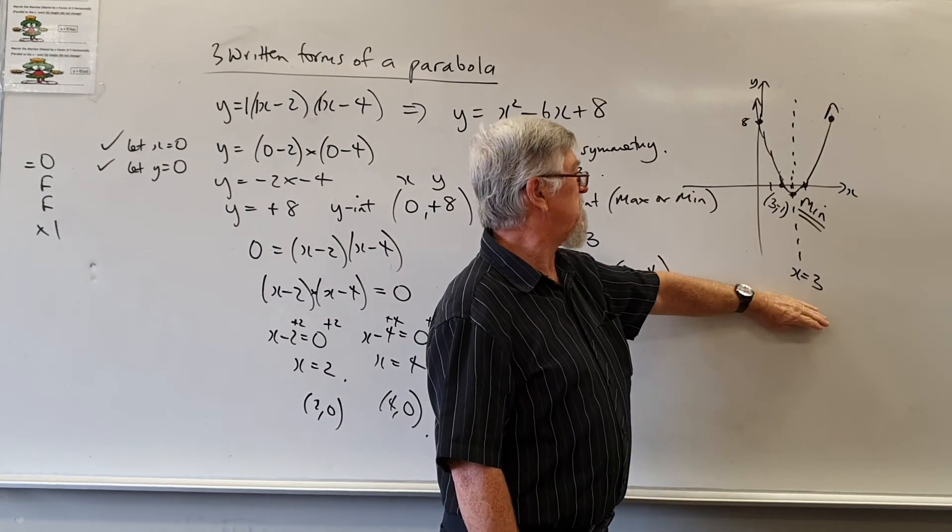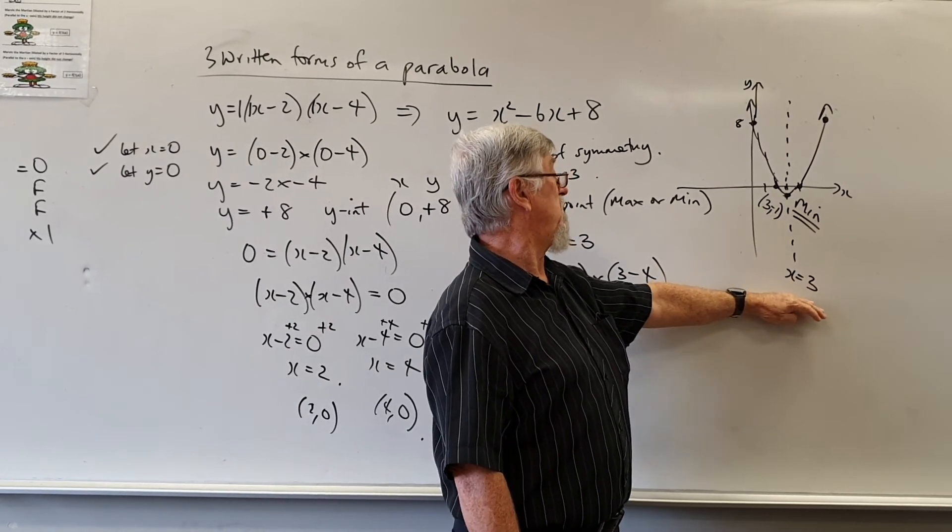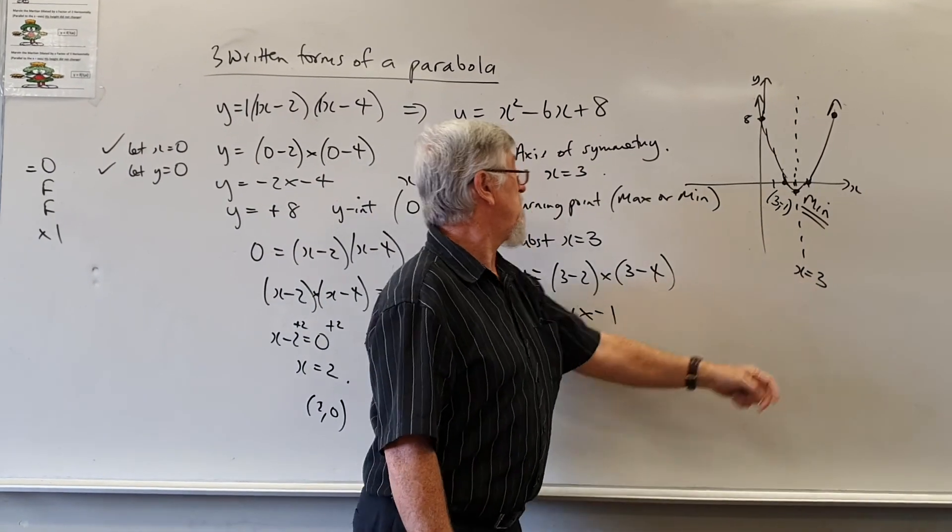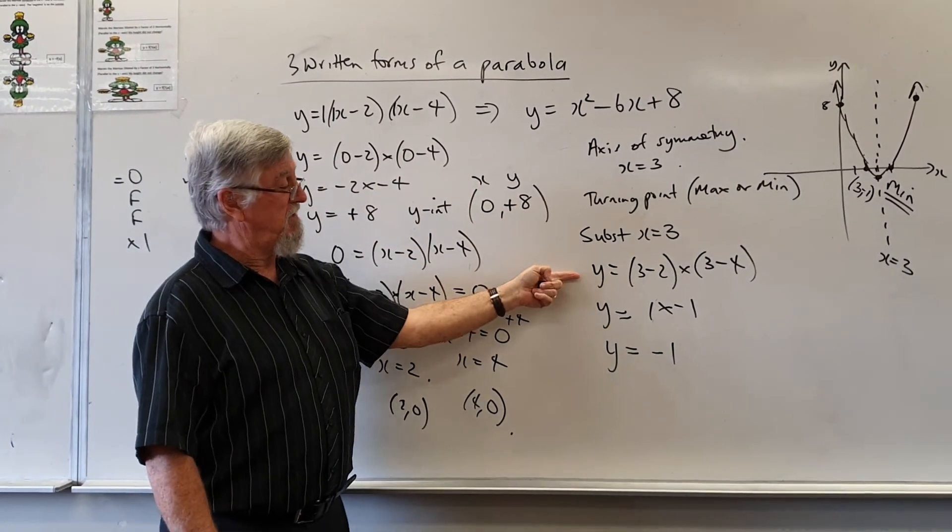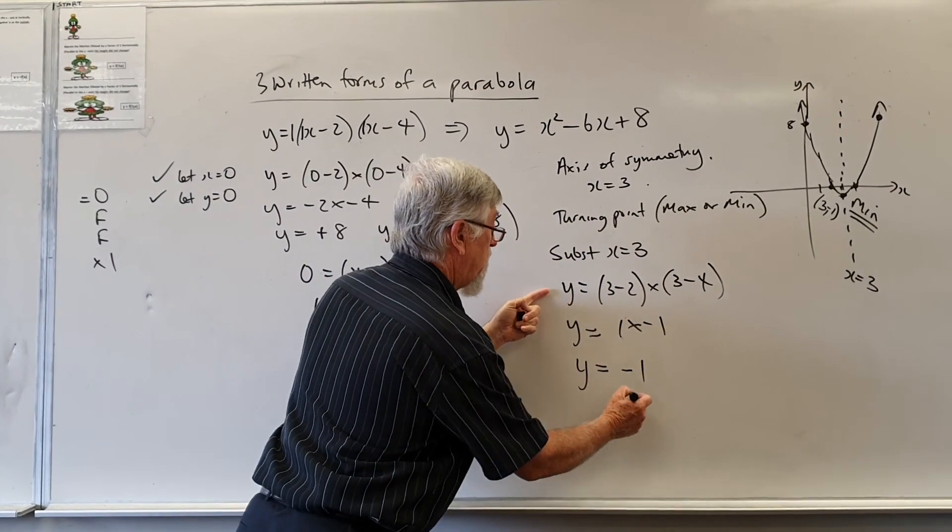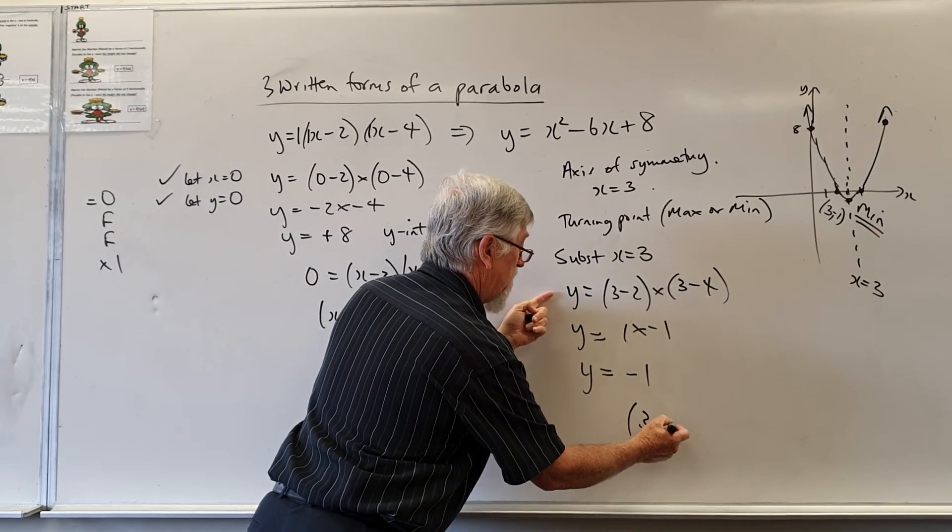How do you get the coordinate center of the min? In this case, the min or that turning point. Substitute the 3 back into the original equation, which is over here. And you end up with your coordinates. We put in a 3 and we ended up with a minus 1.